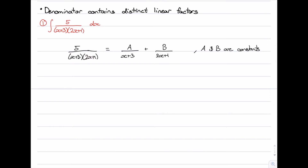Our job now is to find out what a and b are. There are three different ways of finding these constants. The first type is known as equating coefficients. We start by writing 5 over (x plus 3)(2x plus 1) and rewriting it with a common denominator.